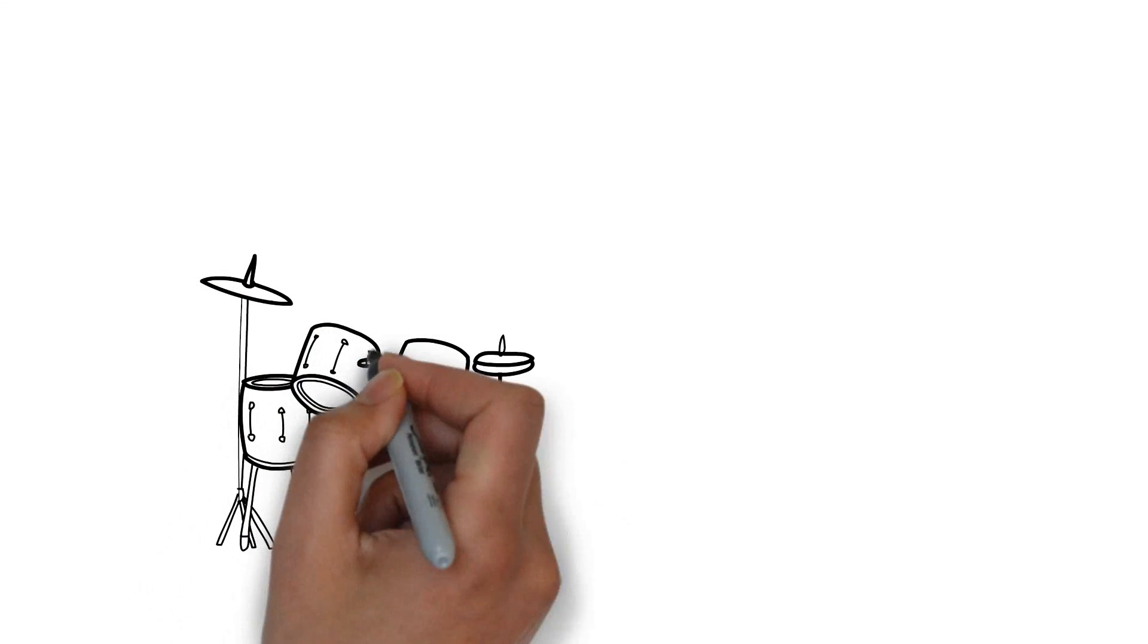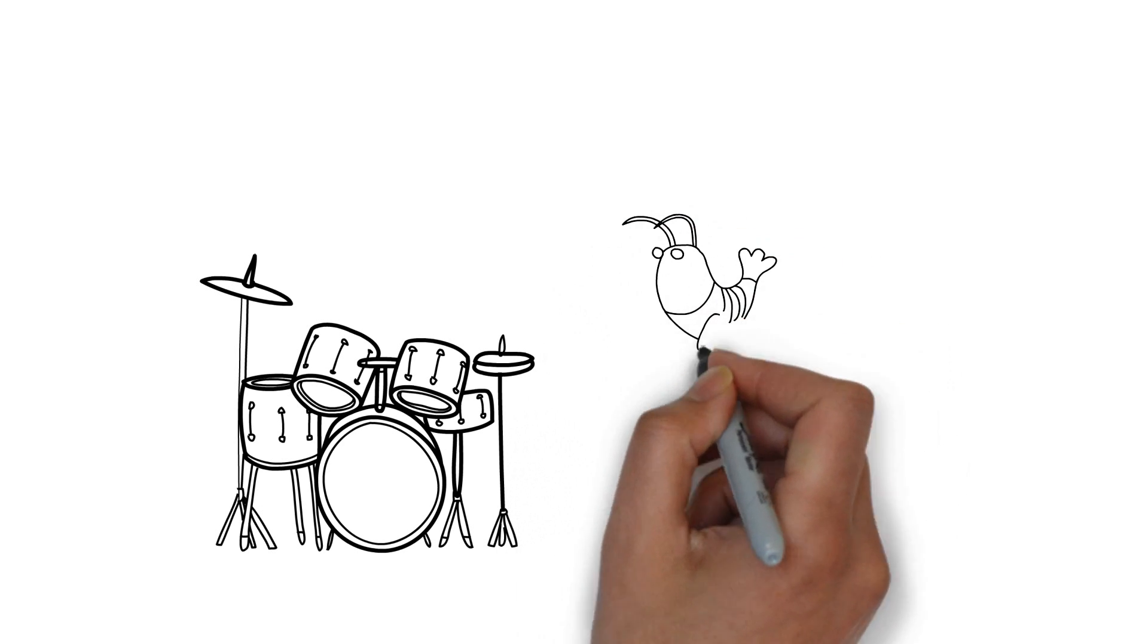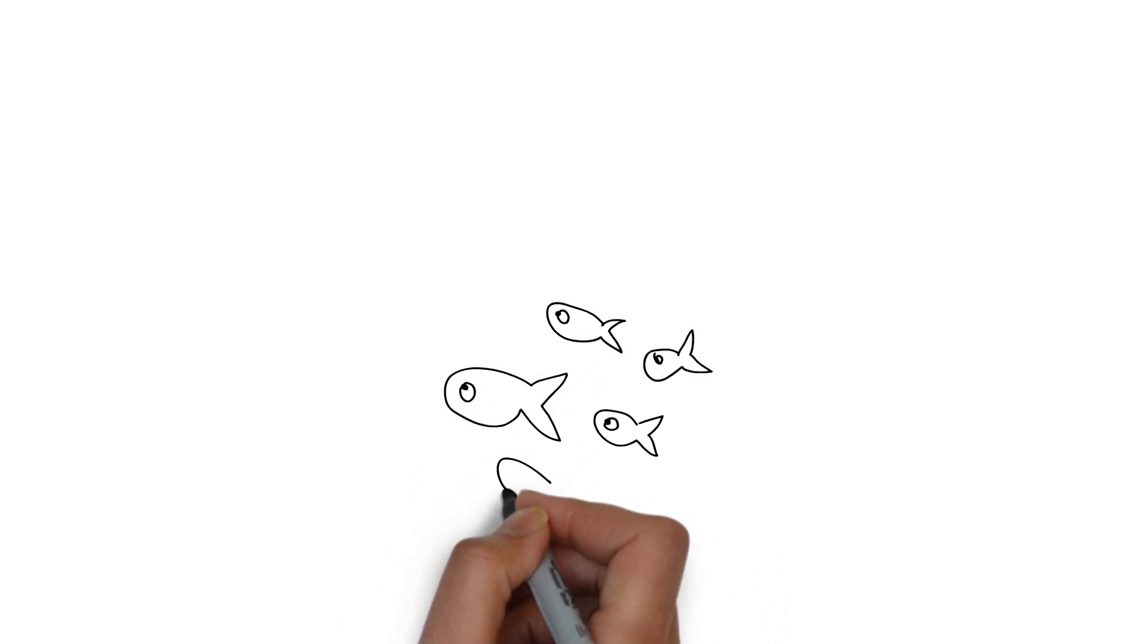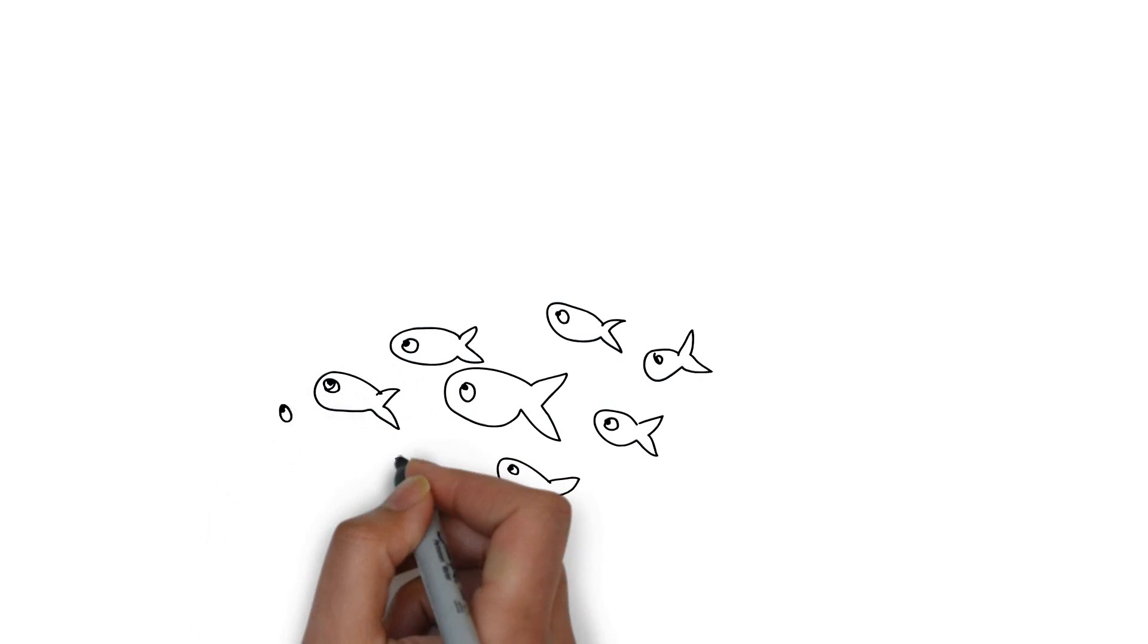So, the snapping shrimps really set the bass down there and we can consider them to be the drummers of the ocean. What about the singers? Well, to find the singers we must pay attention to what the fish are saying or singing.